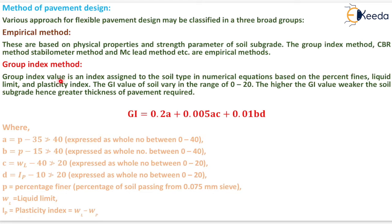Group index value is an index assigned to the soil type in numerical equations based on the percent fines, liquid limit and plasticity index. The group index value of soil vary in the range of 0 to 20. The higher the group index value, weaker the soil subgrade. Hence greater thickness of pavement required.